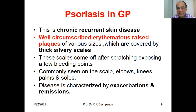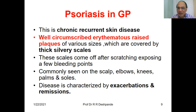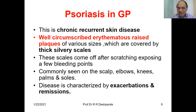Fast revision: psoriasis is a chronic recurrent skin disease with well-circumscribed, red-colored, raised plaques of various sizes covered by thick silvery scales. These scales come off after scratching and expose a few bleeding points. Commonly seen on the skull, elbows, knees, palms, and soles. The disease is characterized by exacerbation and remission — in Ayurveda: vegavastha (up) and a-vegavastha (down). What strikes you is bilateral symmetrical cracks and scales.